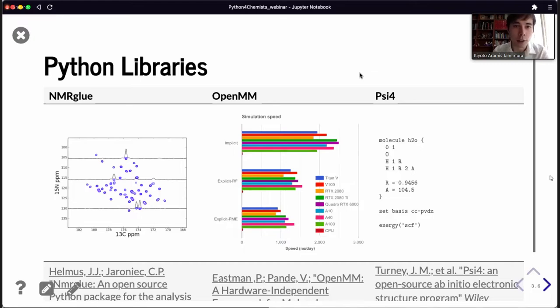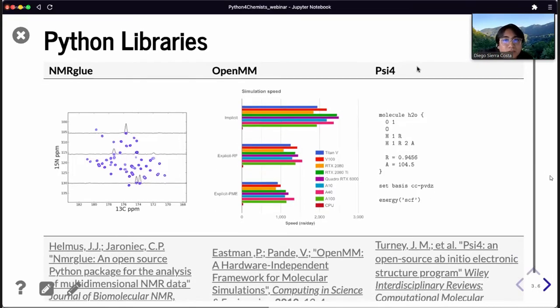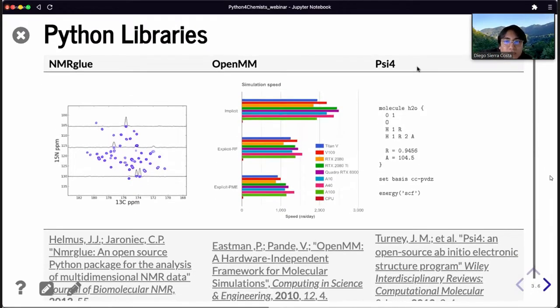We've shown how Python could be used both in an experimental and a computational lab. Diego will further expand on the existing Python libraries, as well as the specific contents of the book. Thanks, Kyo. After some of the examples that Kyo presented, I would like to introduce some concrete instances of Python libraries that chemists might be interested in.